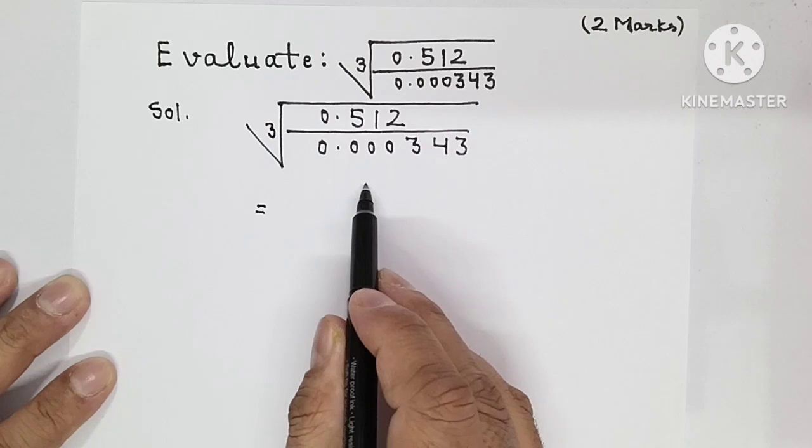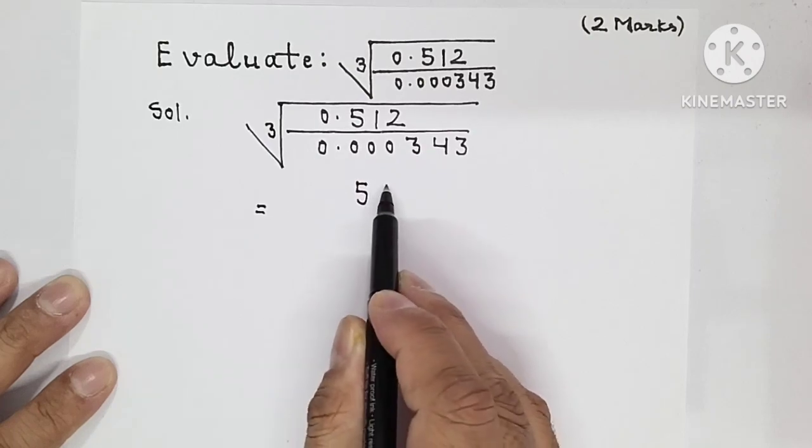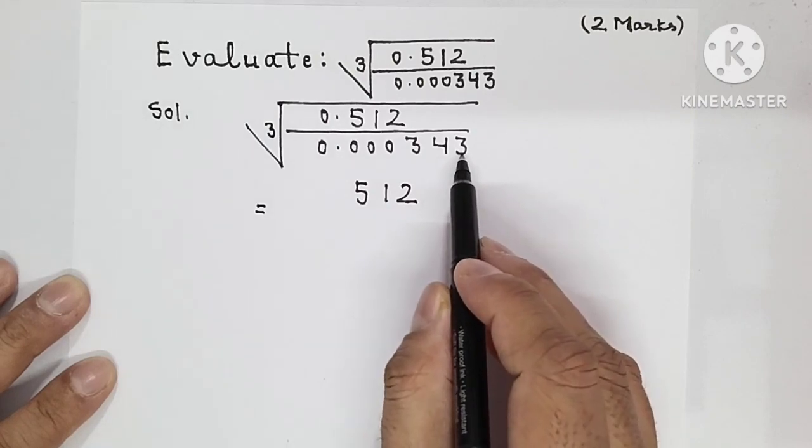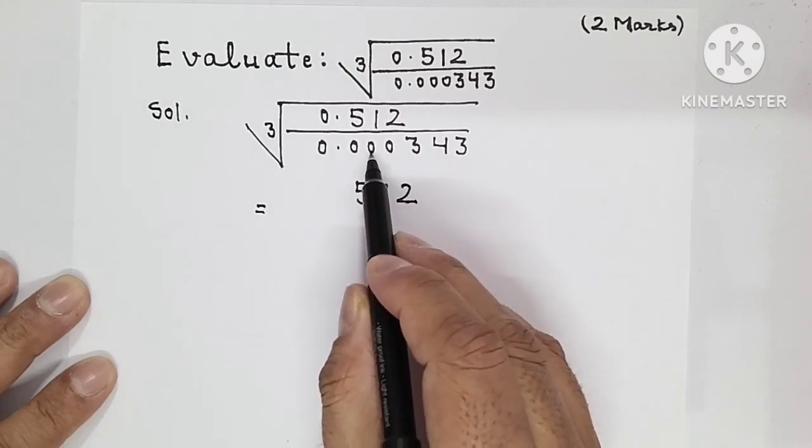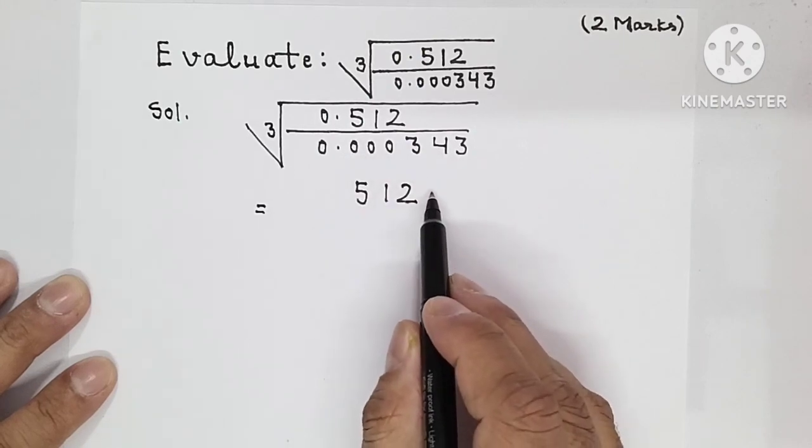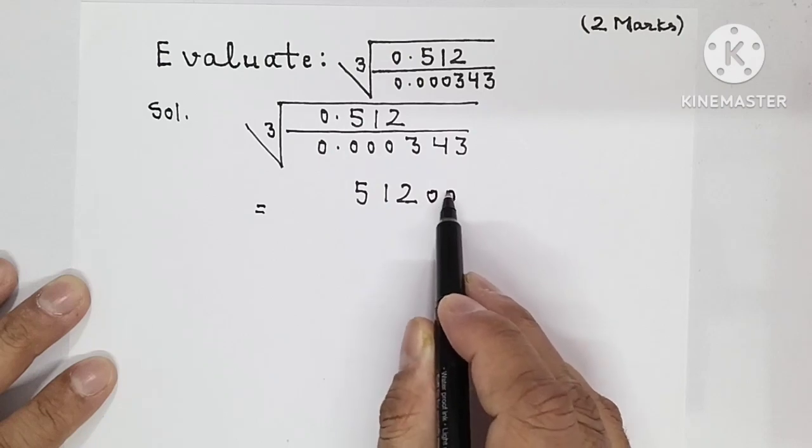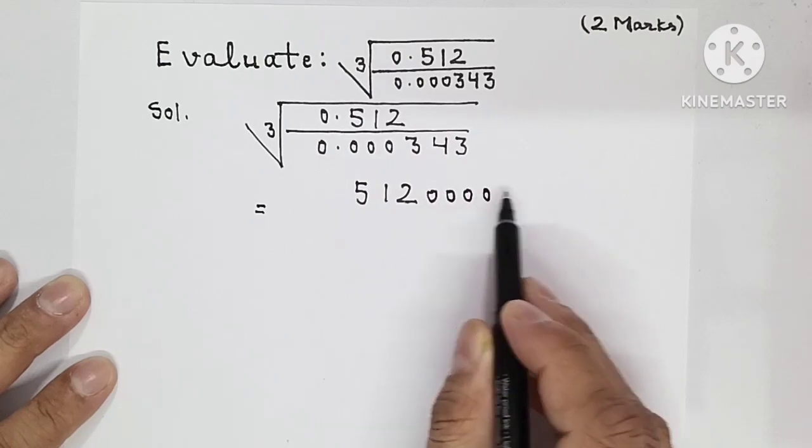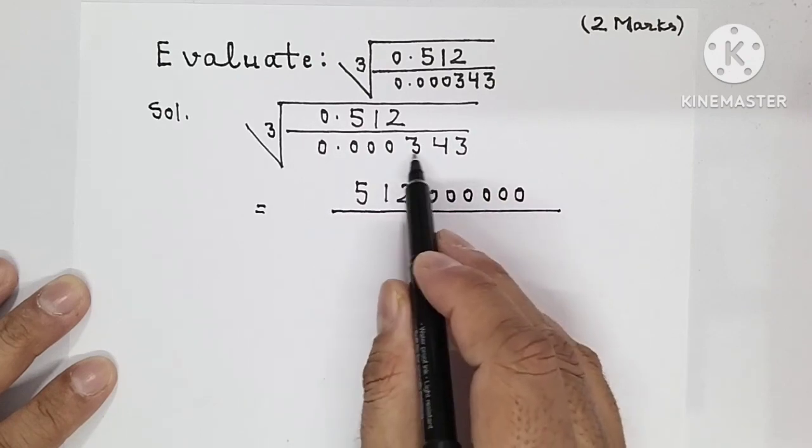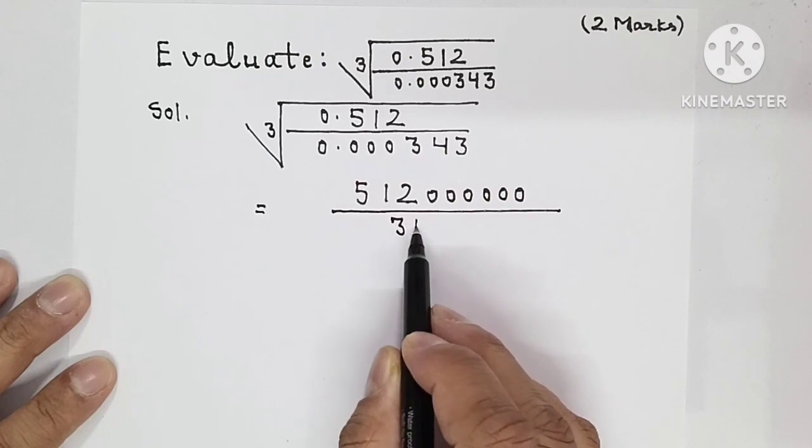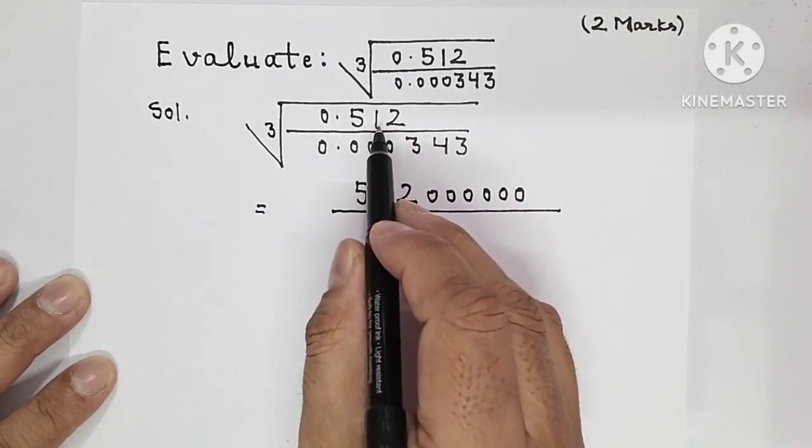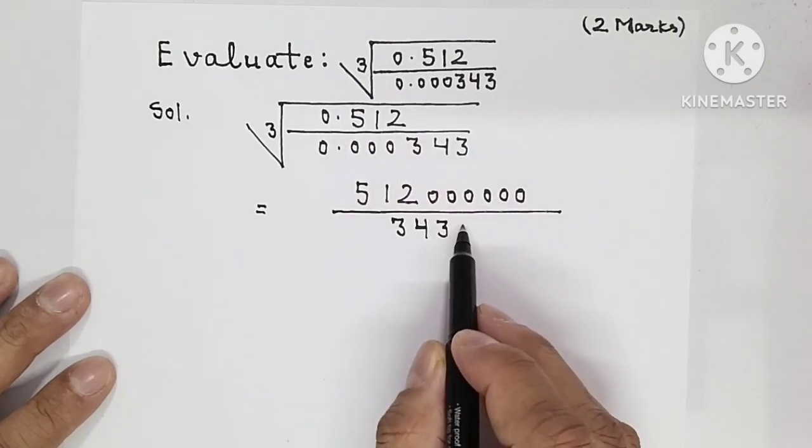Without the decimal, you can write 512. To remove the decimal from the denominator, we count 1, 2, 3, 4, 5, 6 zeros. For 343, when we remove the decimal from the numerator, we add 1, 2, 3 zeros here.